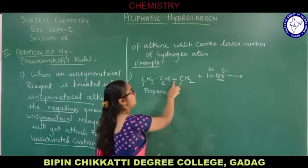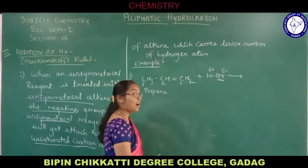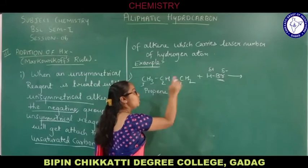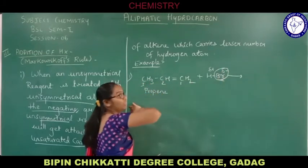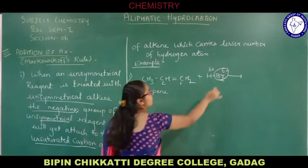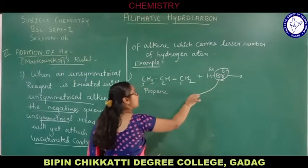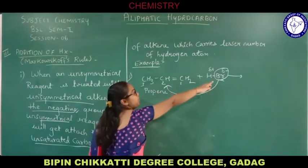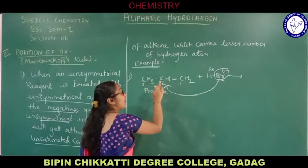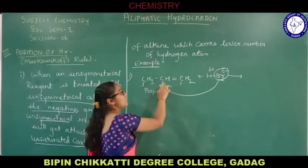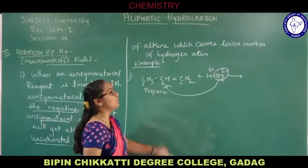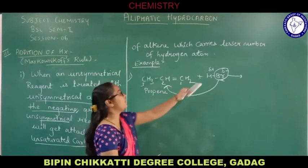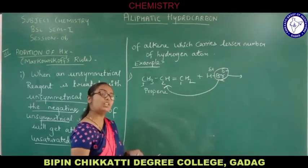The double bond is present between carbon number one and carbon number two. Carbon number one has two hydrogen atoms whereas carbon number two has one hydrogen atom. So this negative terminal — the negative group of the unsymmetrical reagent — will go and get attached to carbon number two, since it has the lesser number of hydrogen atoms. So bromide ion goes and gets attached to carbon number two.